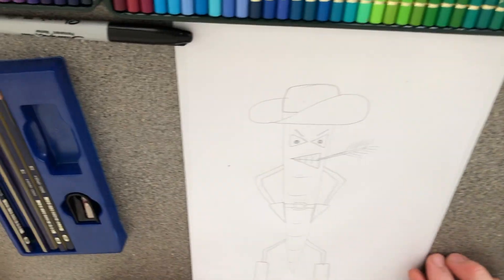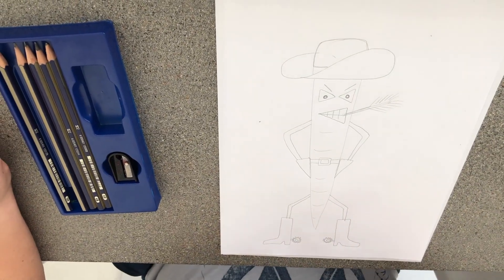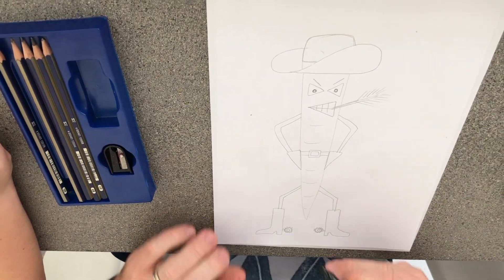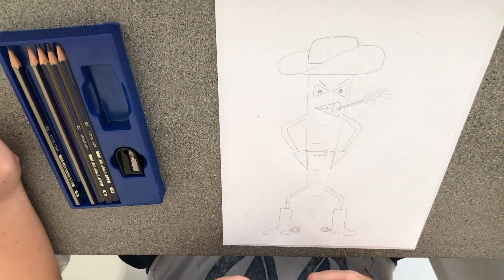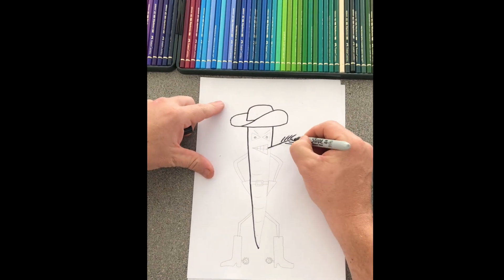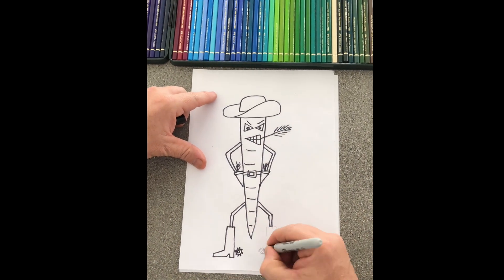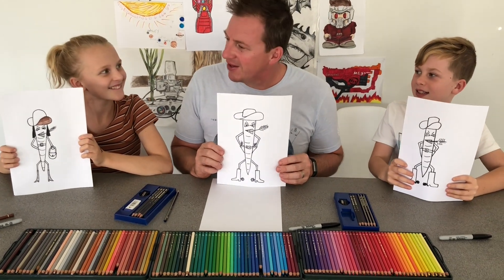There we have our cowboy carrot. Alright. Then we can go over with a sharpie once. All done now. Good job there Lila.